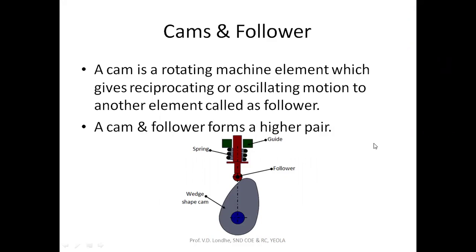A CAM and FOLLOWER is shown in this diagram. This is a radial or wedge CAM and this is the FOLLOWER. A spring force is applied on the FOLLOWER so that it will be continuously in contact with the CAM. The rotary motion of the CAM leads to oscillating or reciprocating motion of the FOLLOWER in the guideway. The contact between the FOLLOWER and CAM is a point contact, so this pair forms a higher pair.